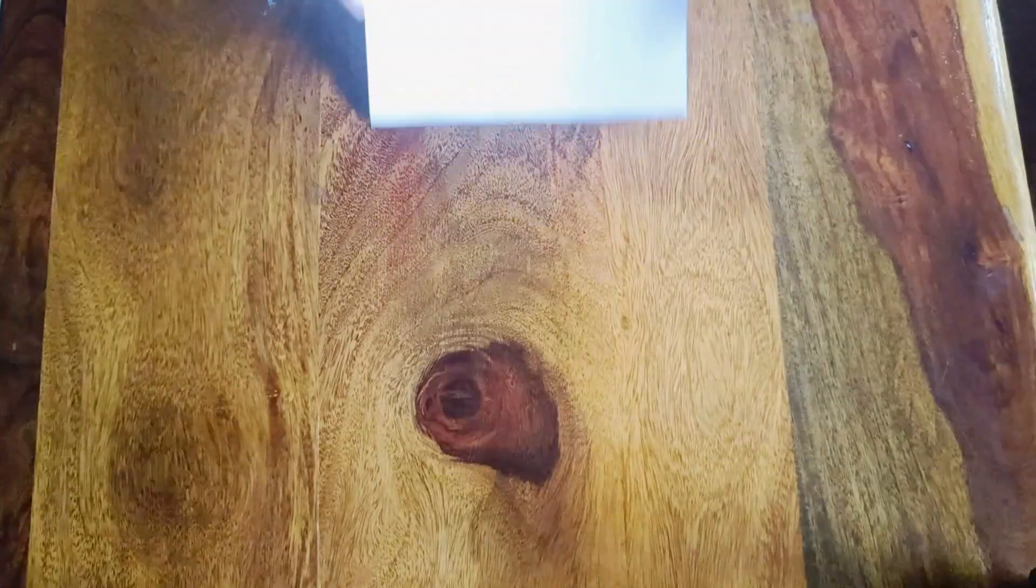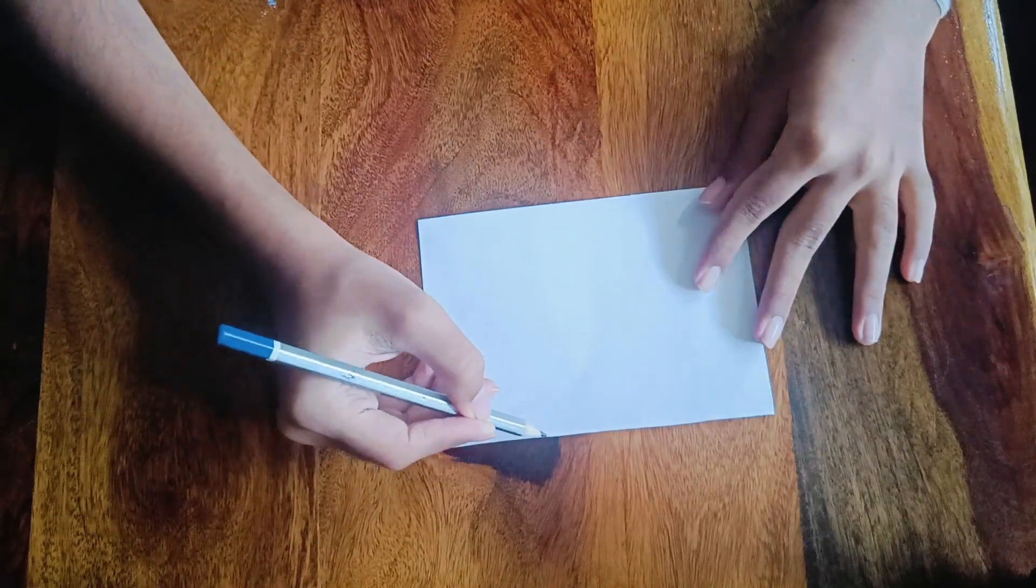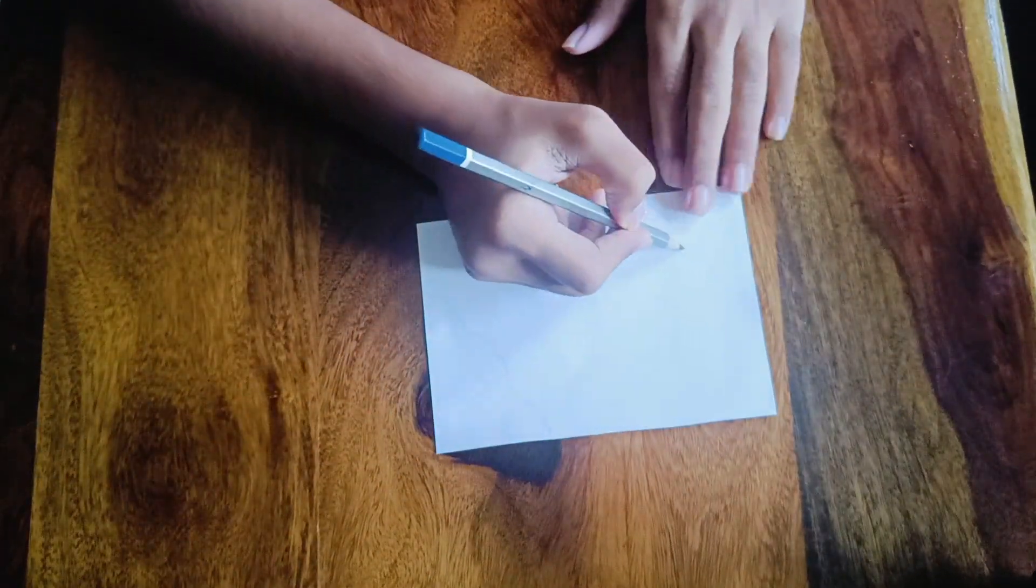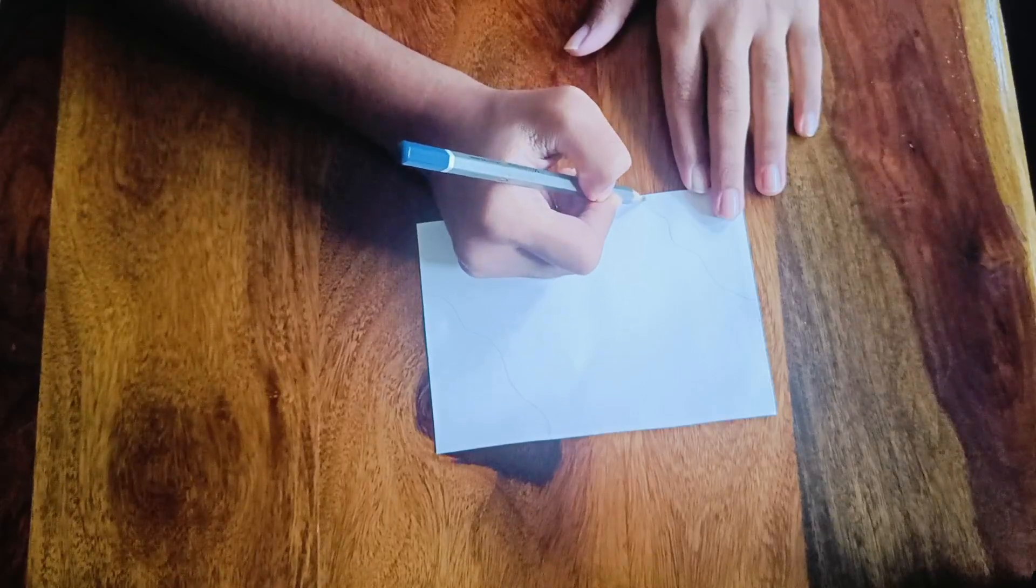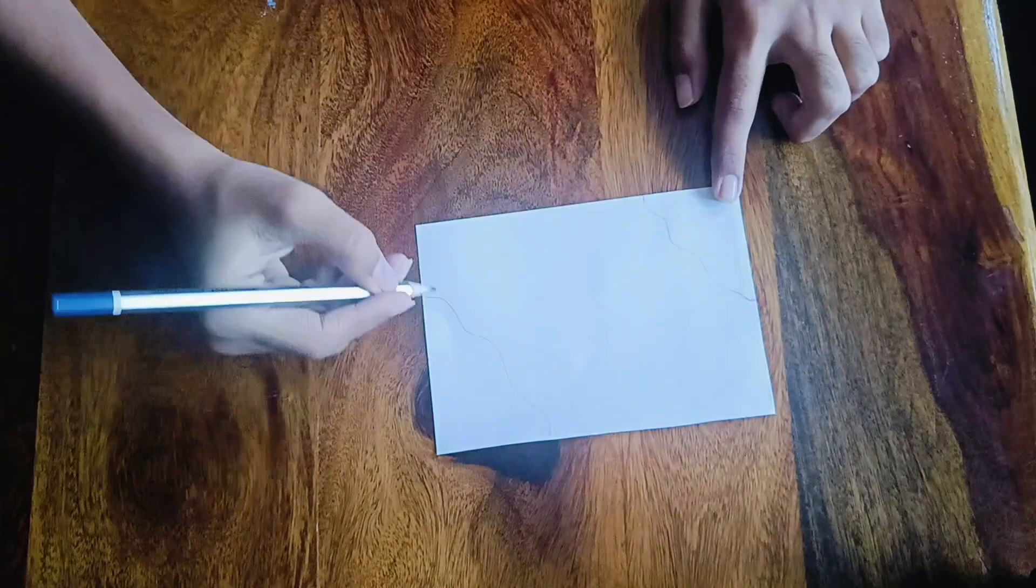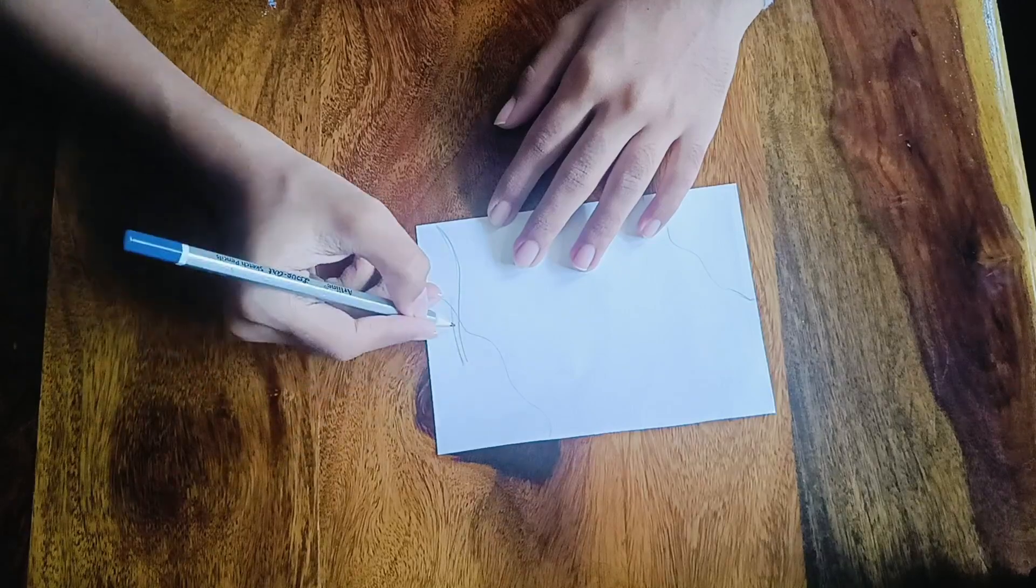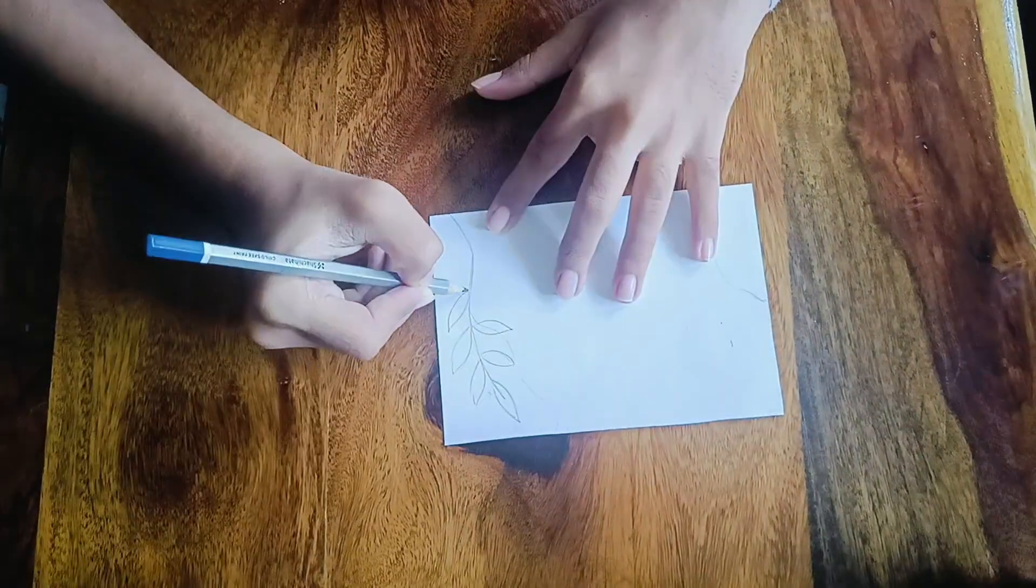So let's start. Here I'm making a rough sketch with Artline HP pencil. The first card we're going to make will be in boho design, and here I made two curve lines in the corner.